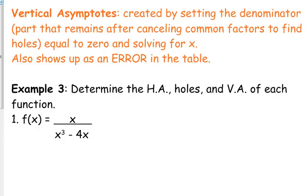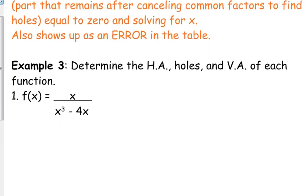Horizontal asymptote. What would that be for x over x cubed minus 4x? Zero. Y equals zero. Because the degree of the denominator is greater.